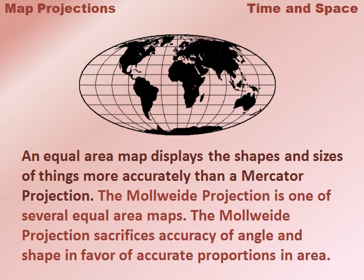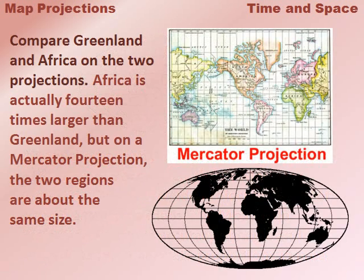An equal area map displays the shapes and sizes of things more accurately than a Mercator projection. The Malvide projection is one of several equal area maps. The Malvide projection sacrifices accuracy of angle and shape in favor of accurate proportions in area. Compare Greenland and Africa on the two projections.